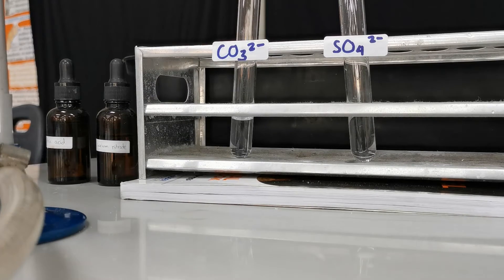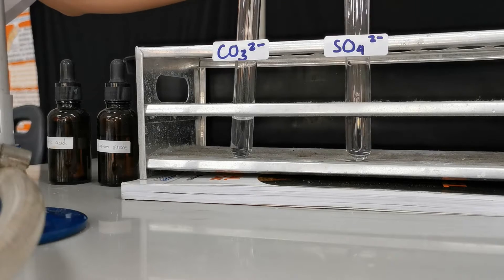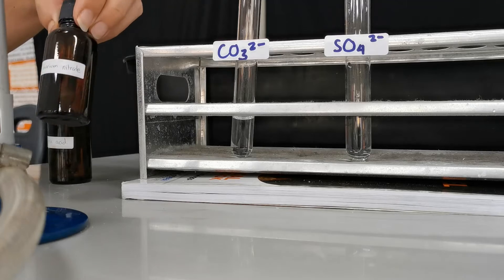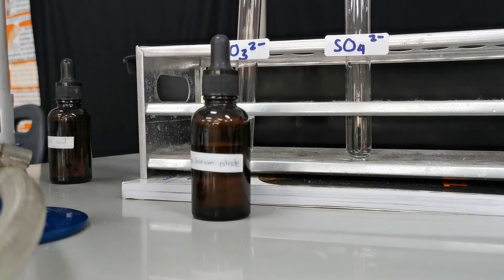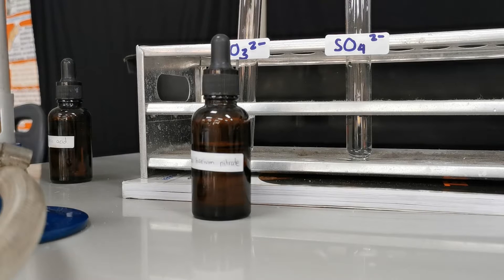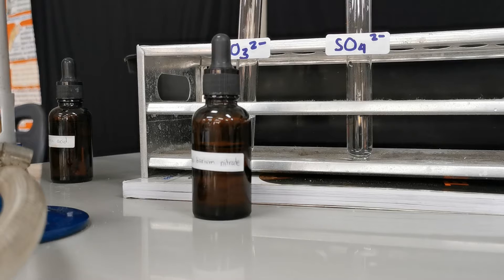Now we're going to test for the presence of sulfate ion. The main reagent for this test would be barium nitrate, because barium and sulfate ions react to give a white precipitate of barium sulfate.